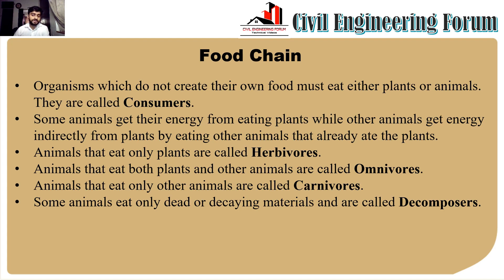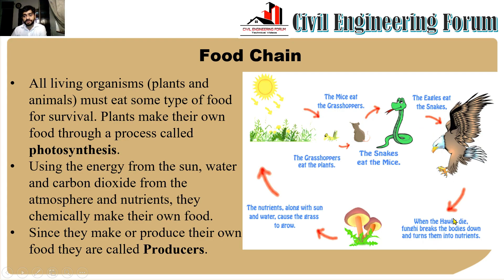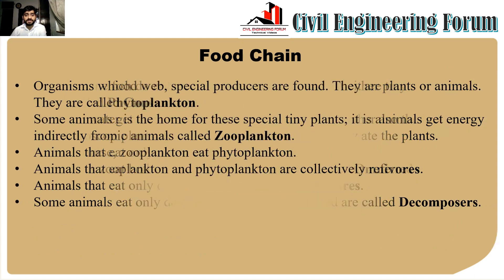Now let's understand the food chain diagram. Plants acquire energy from sunlight through photosynthesis. A grasshopper eats the plants, mice eat the grasshopper, a snake eats the mice, an eagle eats the snake, and when the eagle dies, fungi break the body down into nutrients. These nutrients cause grass to grow again, the grasshopper eats the grass, and the entire cycle repeats. This is known as a food chain.